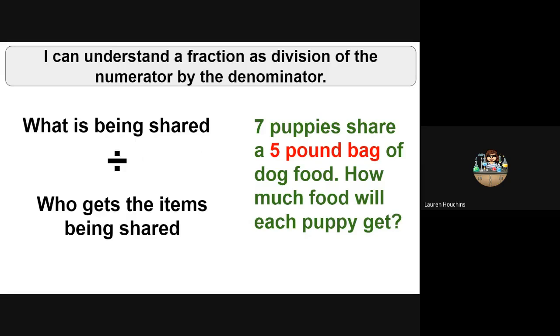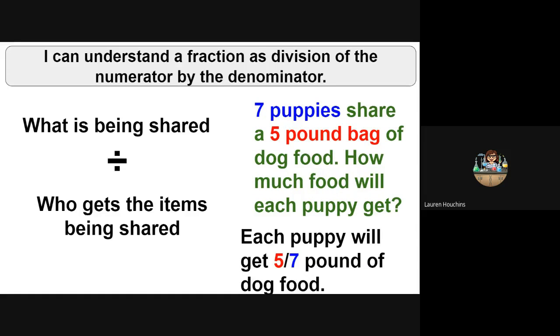Five-pound bag of dog food is being shared. Who gets the items being shared? Seven puppies. So we're going to turn those two numbers into our fraction. So each puppy is going to get five-sevenths pound of dog food.